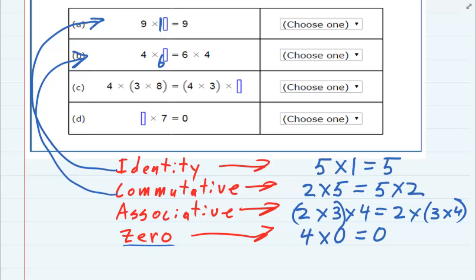The next one has four times three times eight put together, equals four times three times, well, the other number there that has to be multiplied is eight. And it's the order in the grouping that has changed. So that is the associative property.